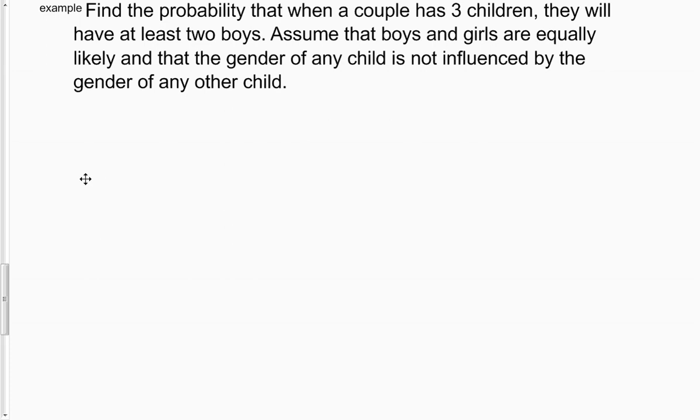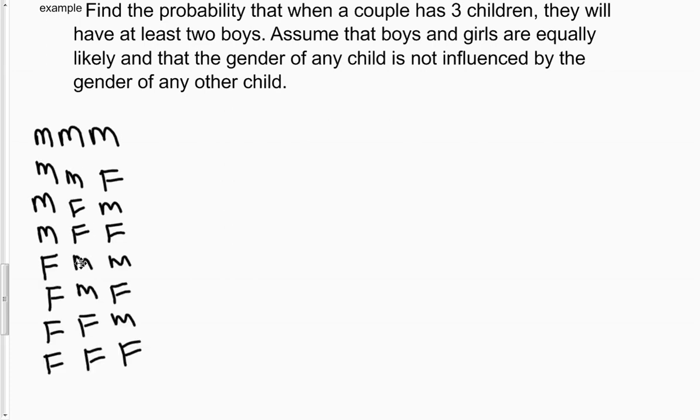And in that case, we would have a sample space that would look something like this. We'd have the first, second, and third child represented. M would represent a male or a boy, and F would represent a female. So this first row is the outcome of having a male for the first child, a male for the second child, and a male for the third child.